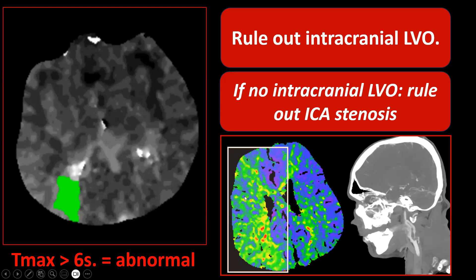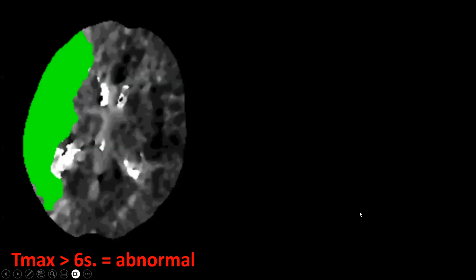The time-to-drain map of the same patient shows more extensive hemispheric changes in the right cerebral hemisphere — the time to drain has clearly increased. This patient has a high-grade stenosis of the origin of the right internal carotid artery, as we can see here.